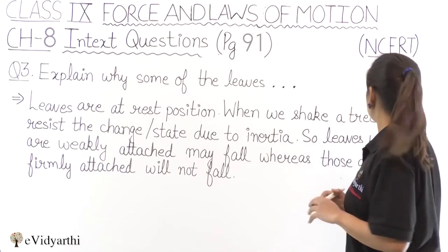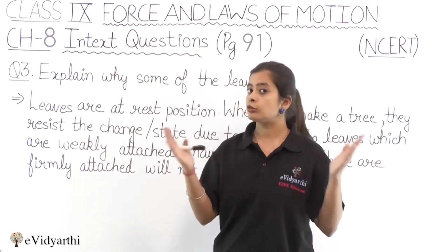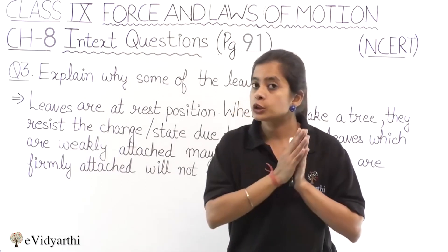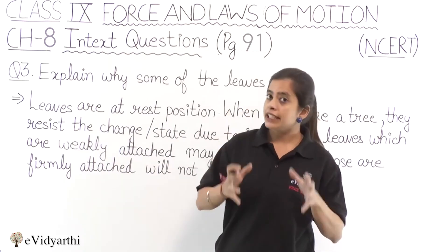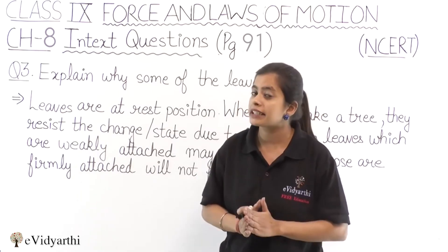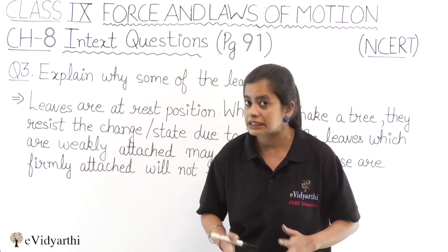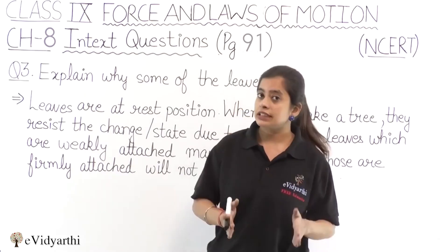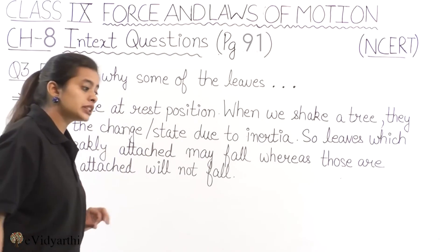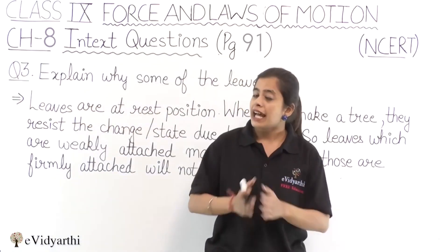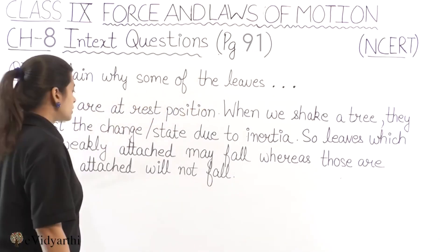When we shake our tree, the leaves resist the change of state due to inertia. Those which are weakly attached to the stem of the leaves will fall, whereas those that are firmly attached will not fall.